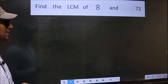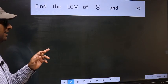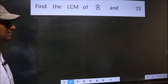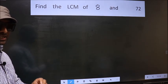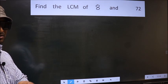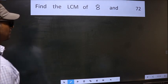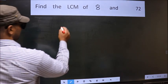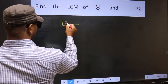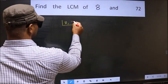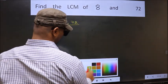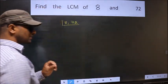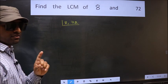Find the LCM of 8 and 72. To find the LCM, first we should frame it in this way — that is 8, 72. This is your step 1.